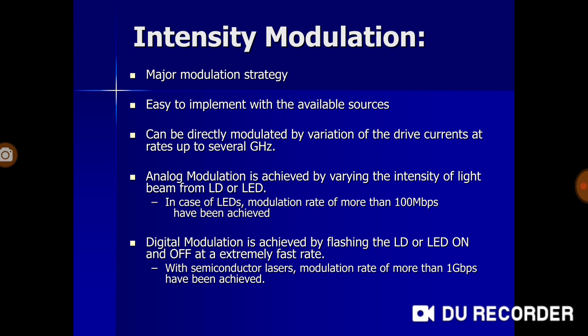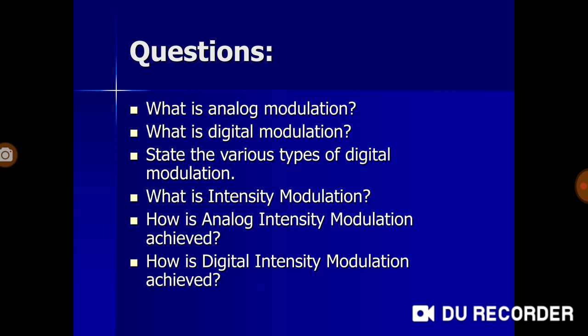For analog modulation, the intensity of the light coming out of the laser diode or LED is continuously varied, supporting a data rate of more than 100 Mbps. For digital modulation, the output of the laser diode or LED is on or off — on means one, off means zero — and it is done at an extremely fast rate. This determines the data rate, which can support up to 1 Gbps.